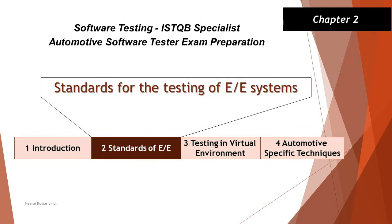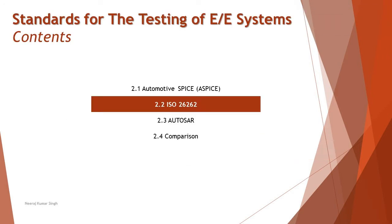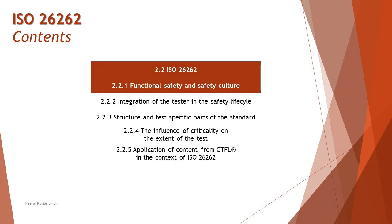Hello friends and greetings for the day. Welcome back to another tutorial on ISTQB specialist automotive software tester. We are still in chapter 2, standards of E&E, and getting into the next topic, 2.2 ISO 26262. As part of this tutorial we are getting started with 2.2.1 functional safety and safety culture.